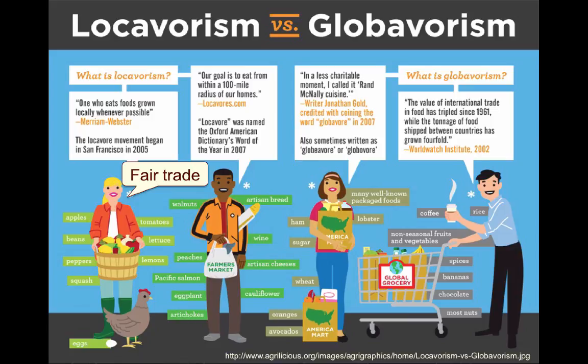Critics claim that fair trade policies have little to no benefit, since it is difficult to ensure produce labeled as fair trade is actually sold to the proper markets. On the other hand, globivores, who are the majority, are people who typically buy food at major supermarkets and purchase goods from all reaches of their nations and throughout the world. They support free trade, believing that national and global markets create the best opportunities for the greatest number of people. Altogether, a good portion of the population is some combination of both, enjoying the ease and accessibility of supermarket foods while occasionally visiting a farmer's market for fresh, local produce.